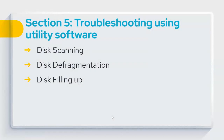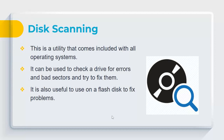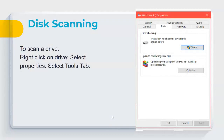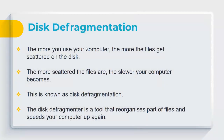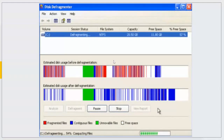The final section covers disk scanning, defragmentation, and disk cleanup. Disk scanning is a utility included with all operating systems that checks drives — including flash drives — for errors and bad sectors and attempts to fix them. Access it by right-clicking the drive, selecting Properties, then the Tools tab. Disk defragmentation reorganizes scattered file fragments on the disk to speed up your computer.